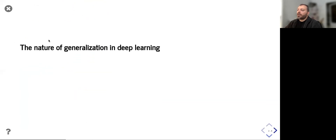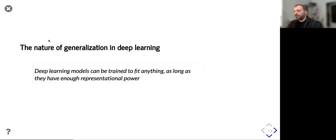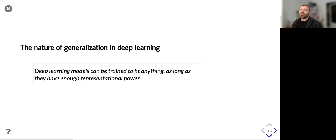An important fundamental property of deep learning: deep learning models can be trained to fit anything, as long as they have enough representational power. This is very powerful — it means there is no task we fundamentally cannot achieve. But this is also dangerous, because since it can fit everything, it can also fit irrelevant information.